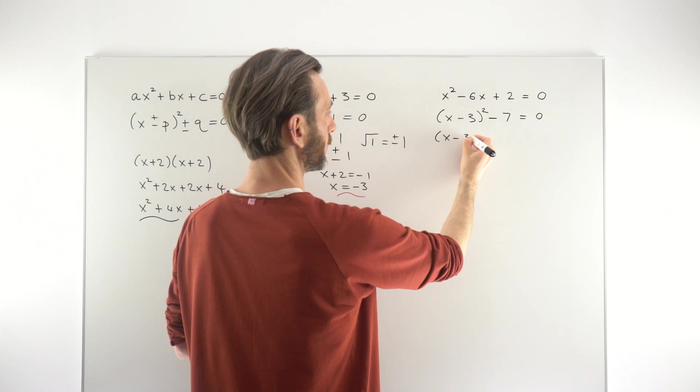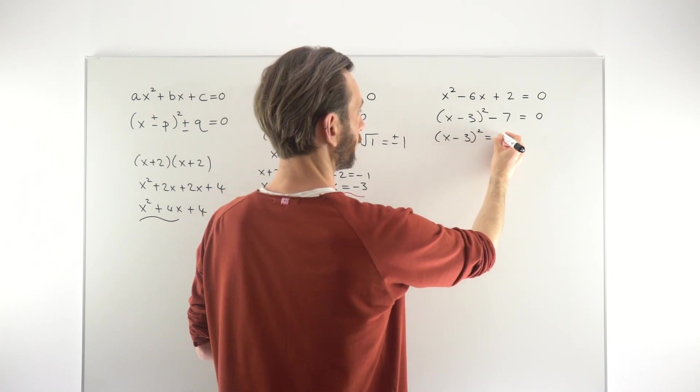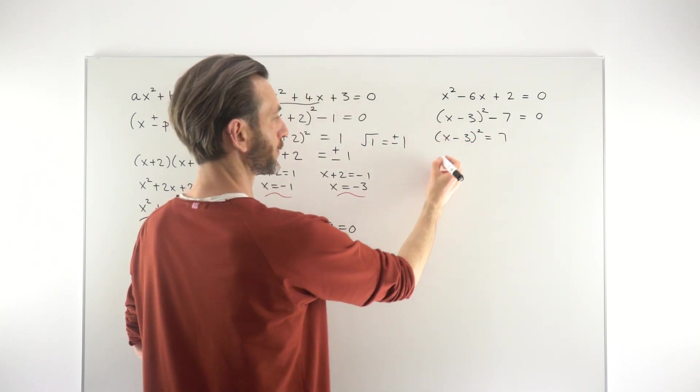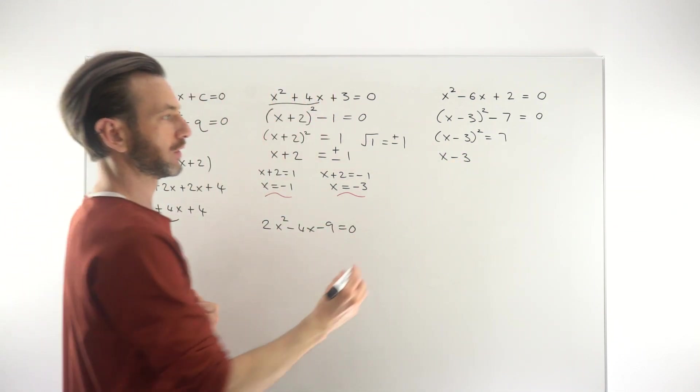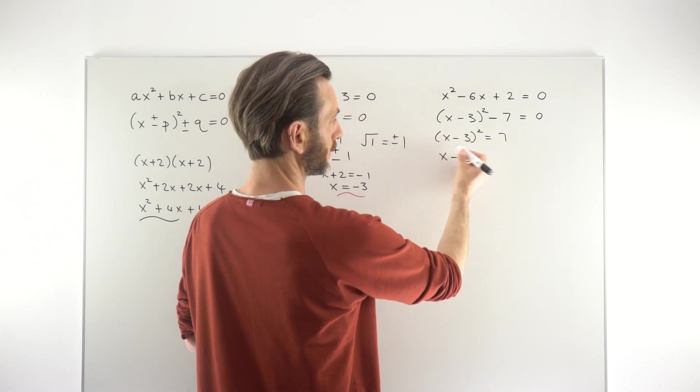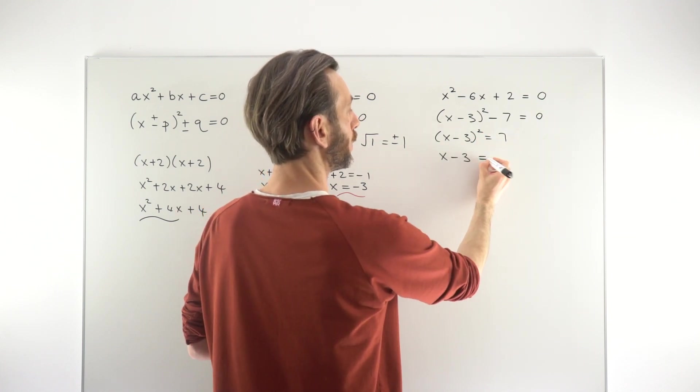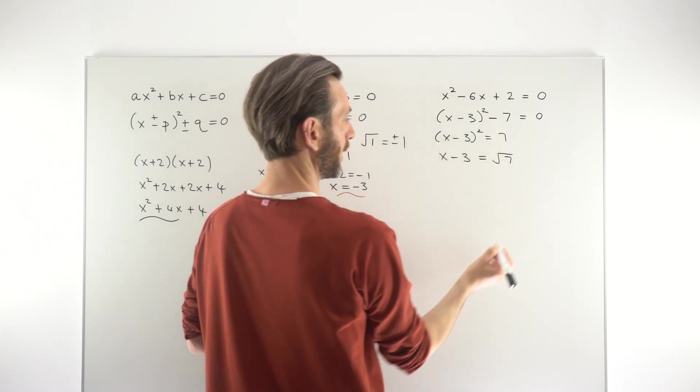Just following through in a similar way to what we did over here. So this becomes (x - 3)² = 7. Taking the square root of both sides, we would get x - 3. Let me just actually write in the square root this time. So square rooting this just gets rid of the squared. Square root of 7, we'll just write that as √7 just now.